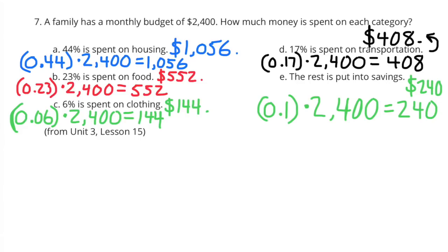B. 23% is spent on food. 23 hundredths times 2,400 equals 552. They would spend $552 on food.